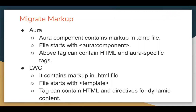First, if we discuss about markup — if you want to create a markup file in Aura, it is saved with .cmp. So the .cmp file is known as the markup file where we can write all the HTML-related code, and that file starts with aura:component. That tag can contain HTML and Aura-specific tags, and whatever is written in this file will be rendered on the UI.